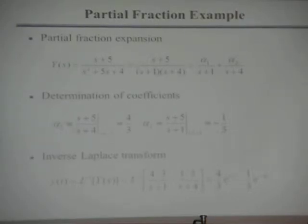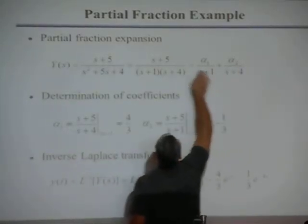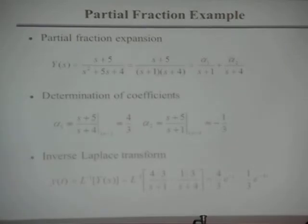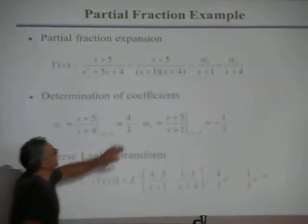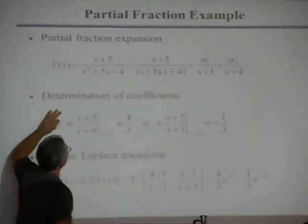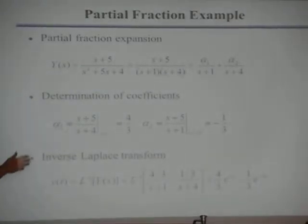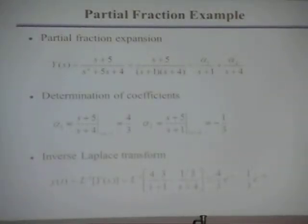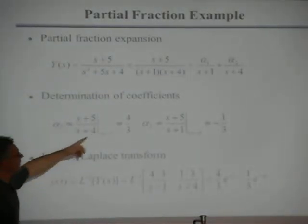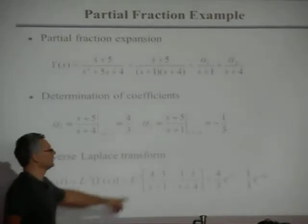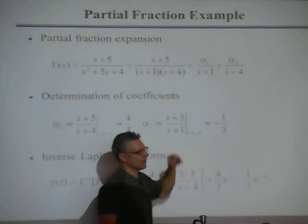To find alpha1, multiply both sides by (s+1) and then set s = -1. That eliminates the (s+1) in the denominator and wipes out the alpha2 term. You end up with alpha1 = (s+5)/(s+4) evaluated at s = -1, which gives 4/3. Similarly, to find alpha2, multiply both sides by (s+4) and set s = -4. You get alpha2 = -1/3.